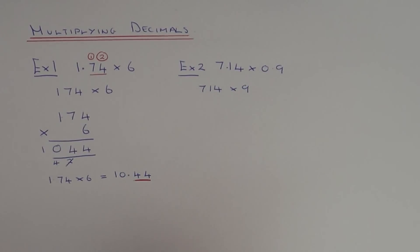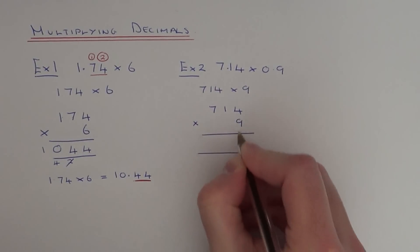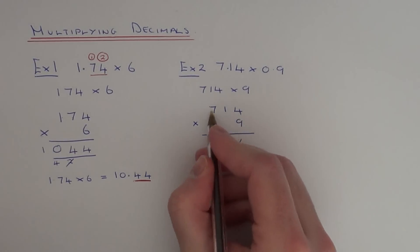So again, let's go with short multiplication. 4 times 9 is 36. 1 times 9 is 9 plus the 3 gives you 12. 7 times 9 is 63 plus the 1 is 64.